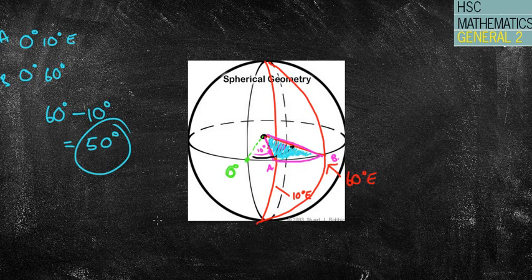So I could then chuck that into my formula, 50 over 360 times 2 pi times my radius, which is 6,400, and then obviously get my answer. So I'm hoping you're kind of getting what we're doing here.